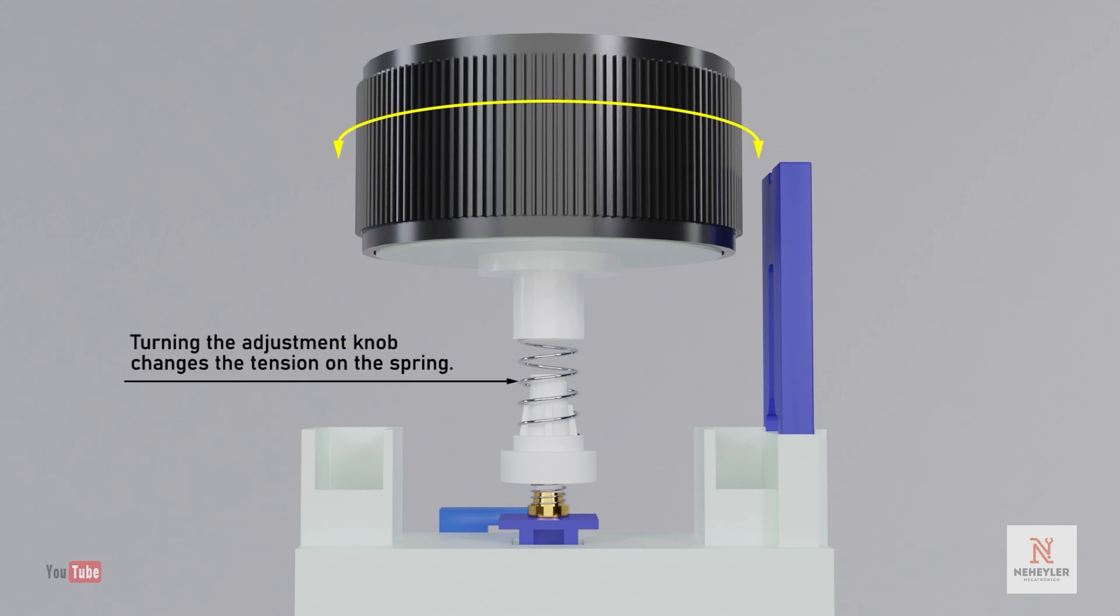When you turn the knob to set another delay time, what it does is change the tension in the spring which can cause it to push harder for a shorter time and less force for a longer delay time.